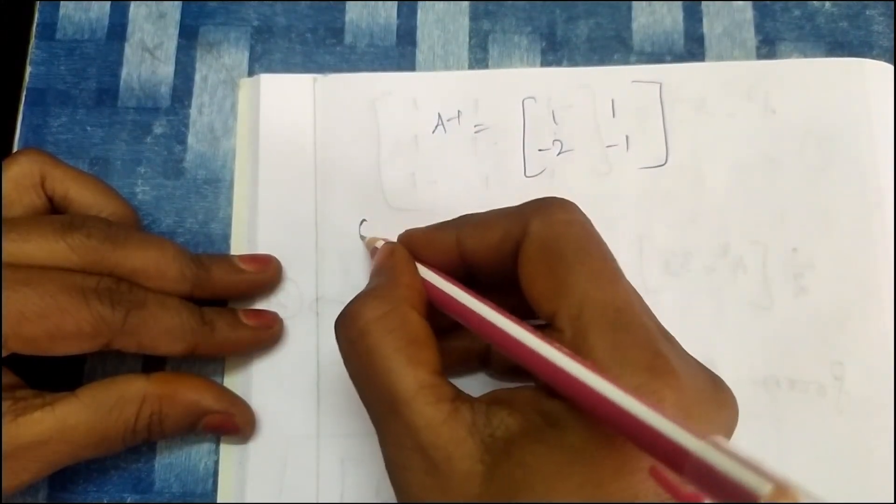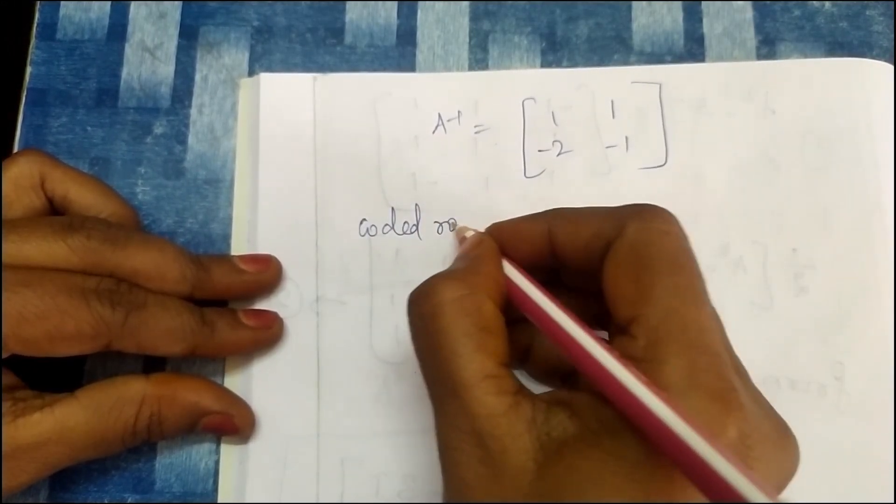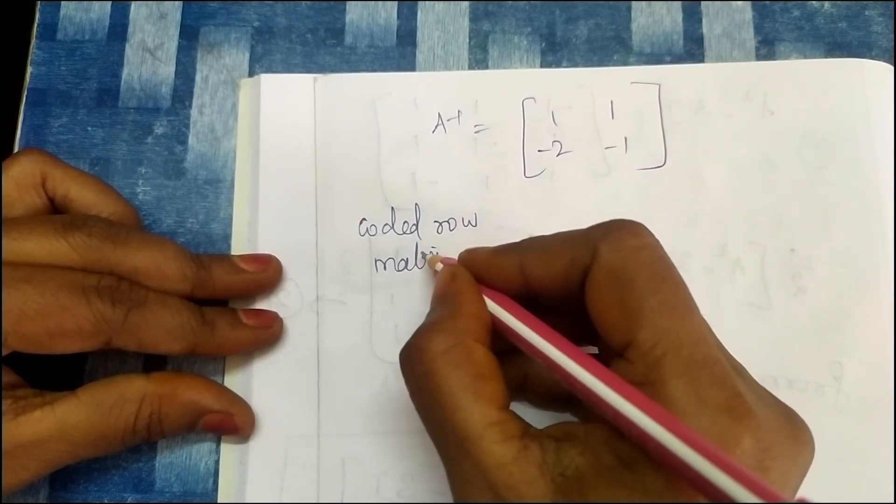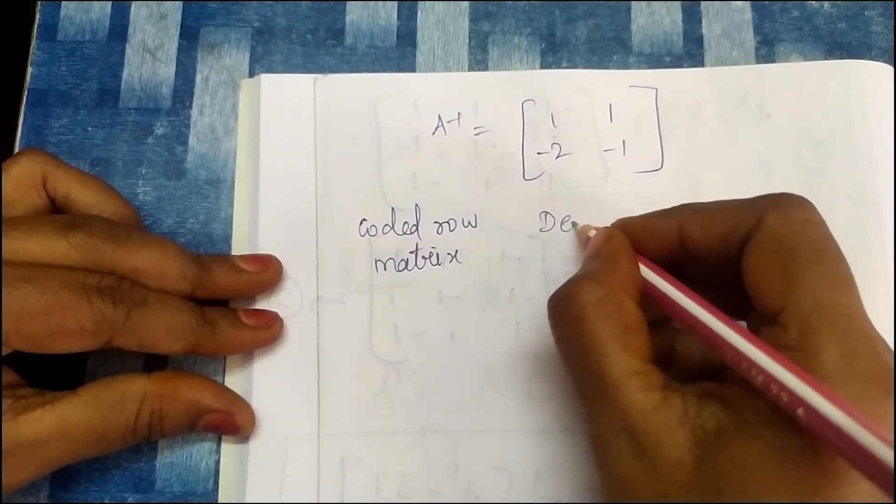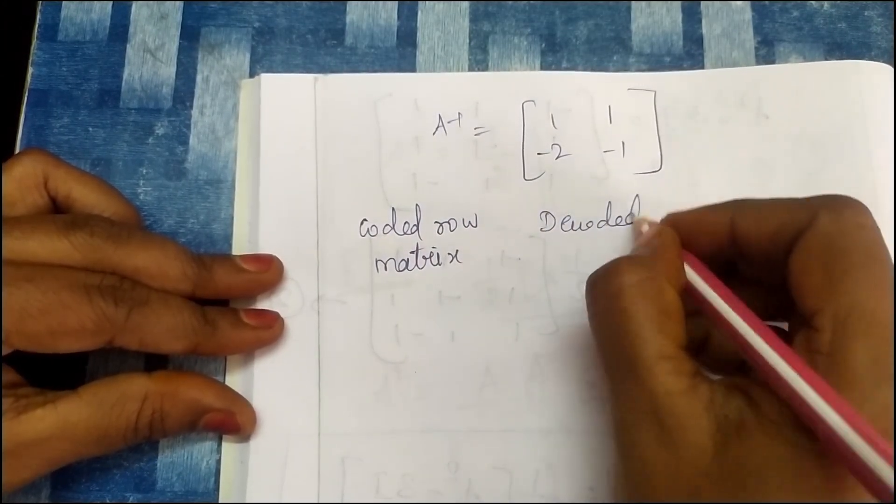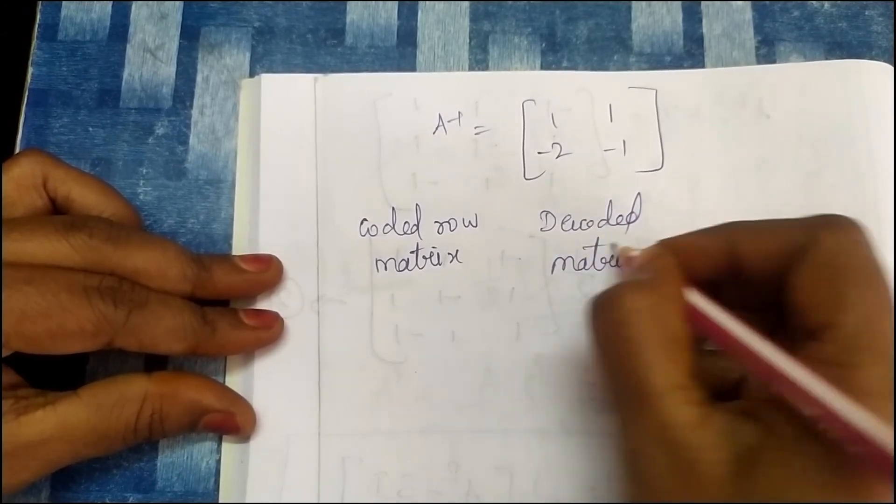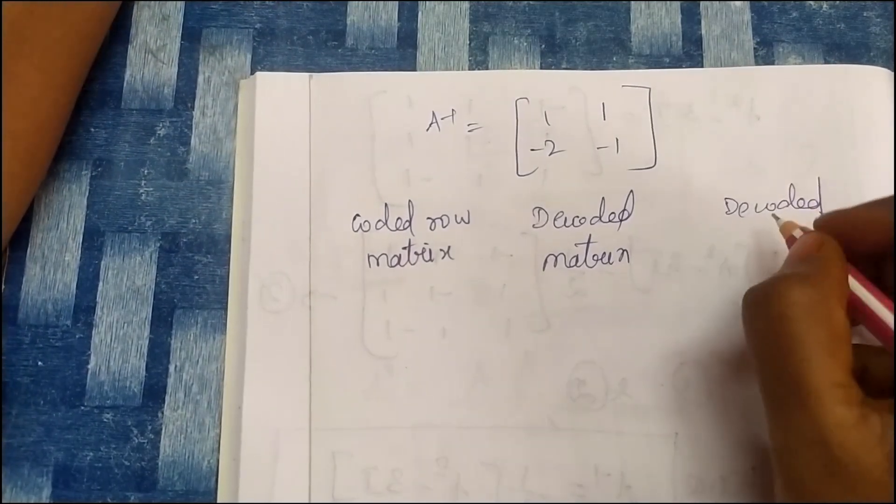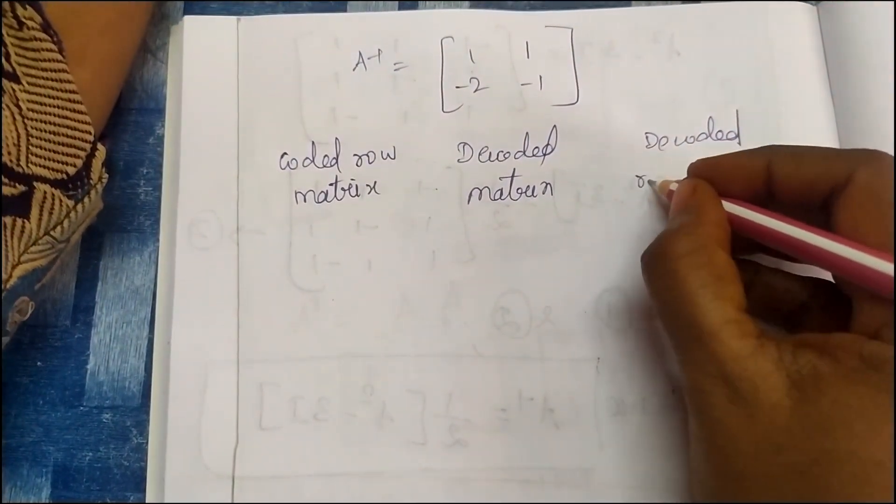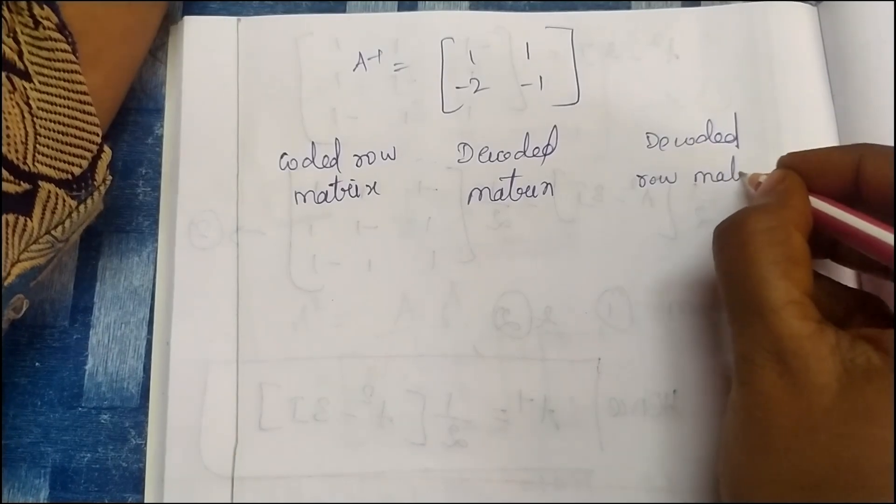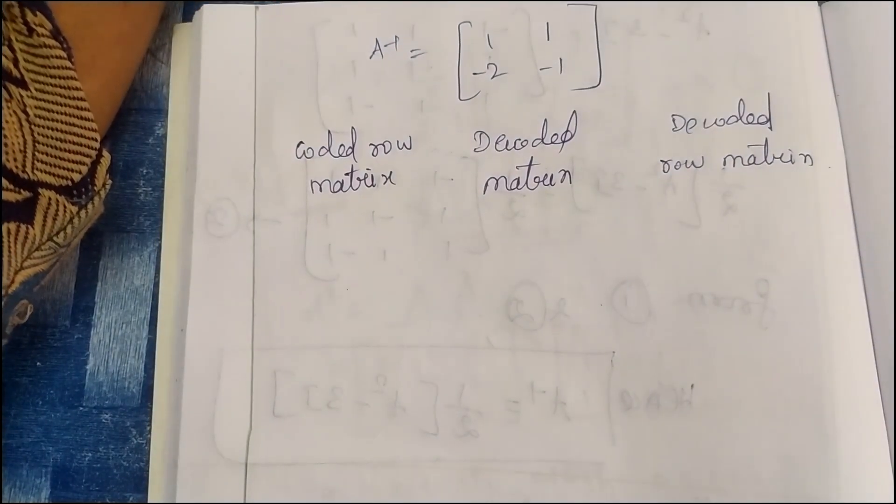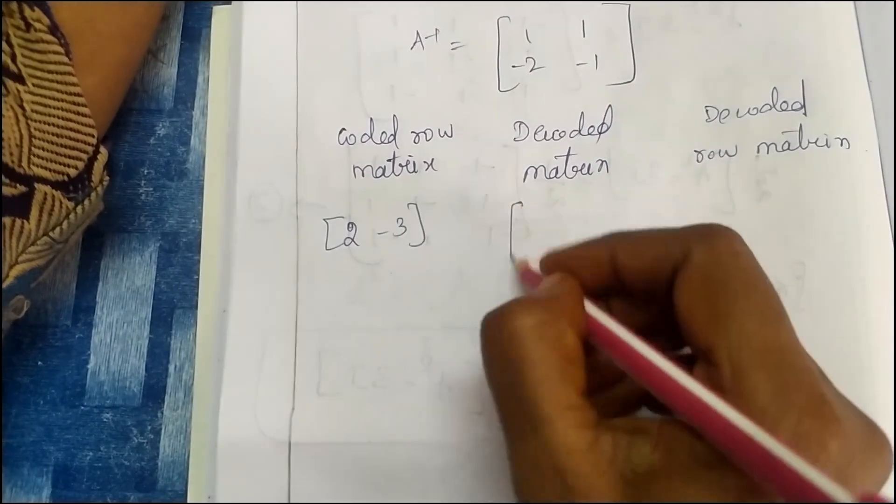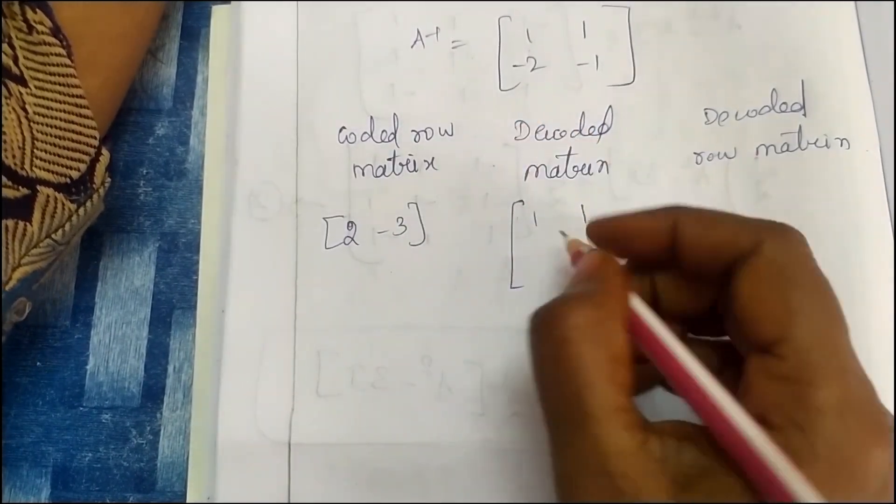Now we have the coded row matrix. Decoder is the decoder. We have to multiply it. What message is the same? We will decode the message. So here is 2, minus 3, first one. So here is the decoder inverse.